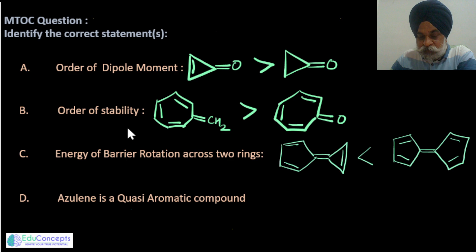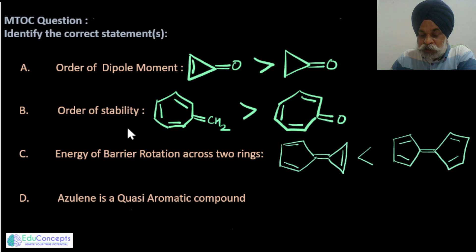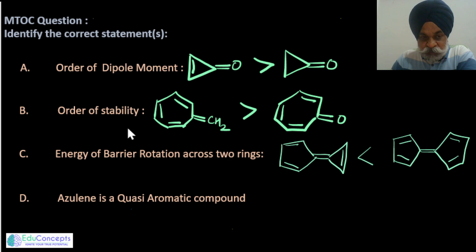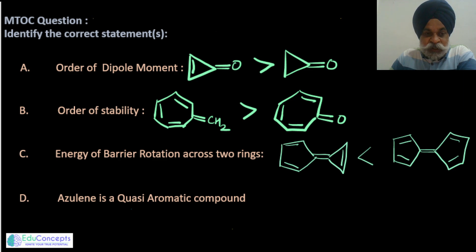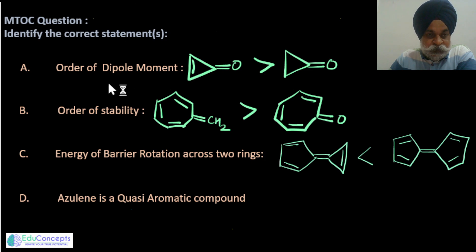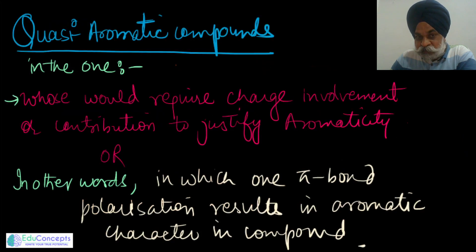The question checks some aspects of GOC as well as our knowledge of azulene — what exactly do we mean by azulene and is it a quasi-aromatic compound. This is a question asked very often by students who are not clear with the topic of quasi-aromatic compounds.